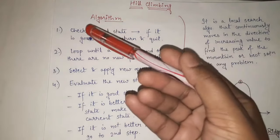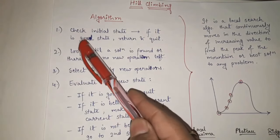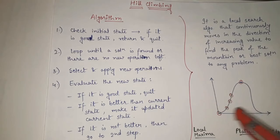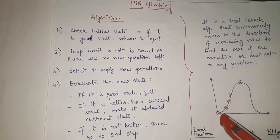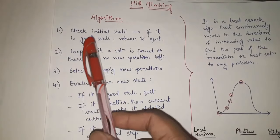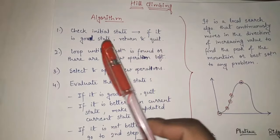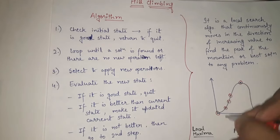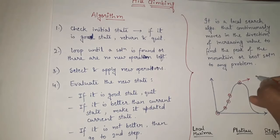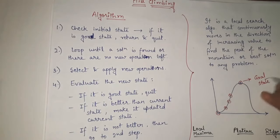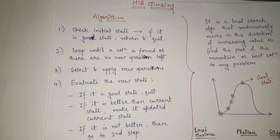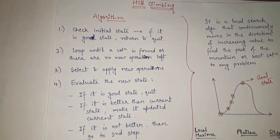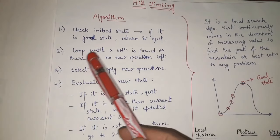Now let's see the algorithm steps. The first step is to check the initial state. For example, the initial state is the origin on the hill diagram. We check: if the initial state is the goal state, return and quit. The goal state is the highest point, so if the initial state already equals the goal state, the algorithm ends here.